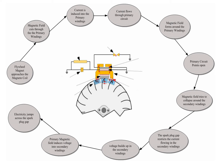The operation is this: as the flywheel magnet on the flywheel approaches the magneto coil, the magnetic field around the flywheel cuts through the primary windings. As the magnetic field cuts through the primary windings, current is induced into the primary windings and it flows through the primary circuit. The points are closed, so the current flows momentarily through the complete primary circuit.